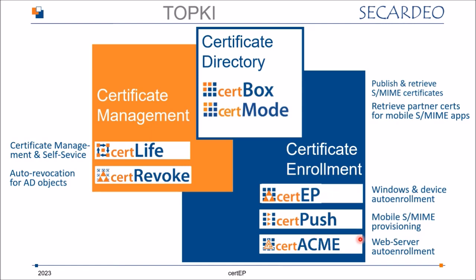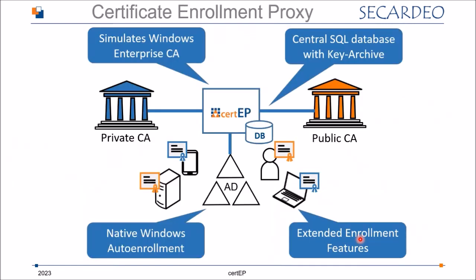Now we go deeper into CertiP — the Certificate Enrollment Proxy. CertiP basically simulates a Windows Enterprise CA. It is installed on a server in your Active Directory, uses an SQL database — which can be a Microsoft database or MySQL — and the database also serves as a key archive for private keys. CertiP performs native Windows auto-enrollment with no software on the clients, as clients use the standard built-in auto-enrollment procedures because they think they are talking with the Microsoft CA.